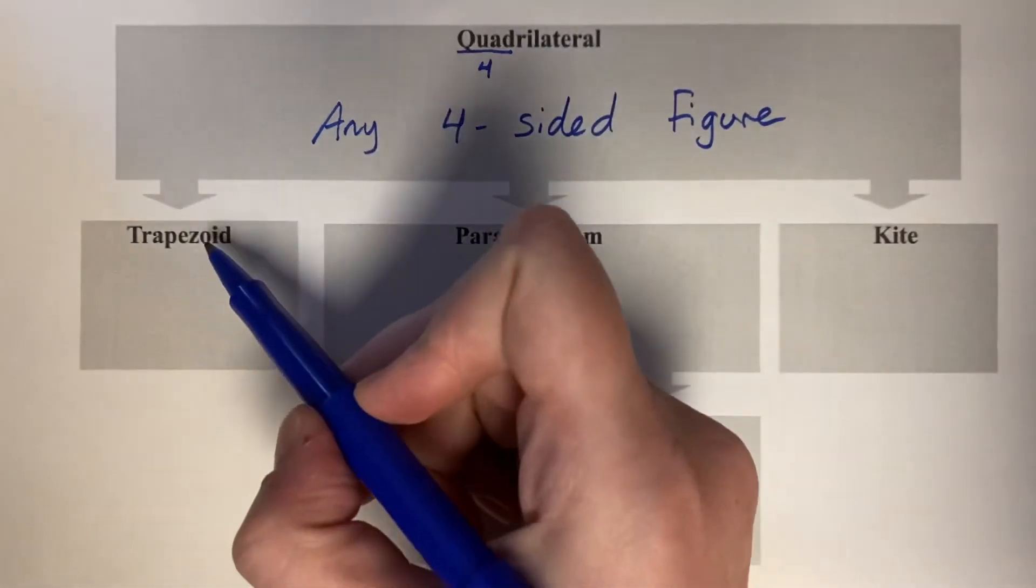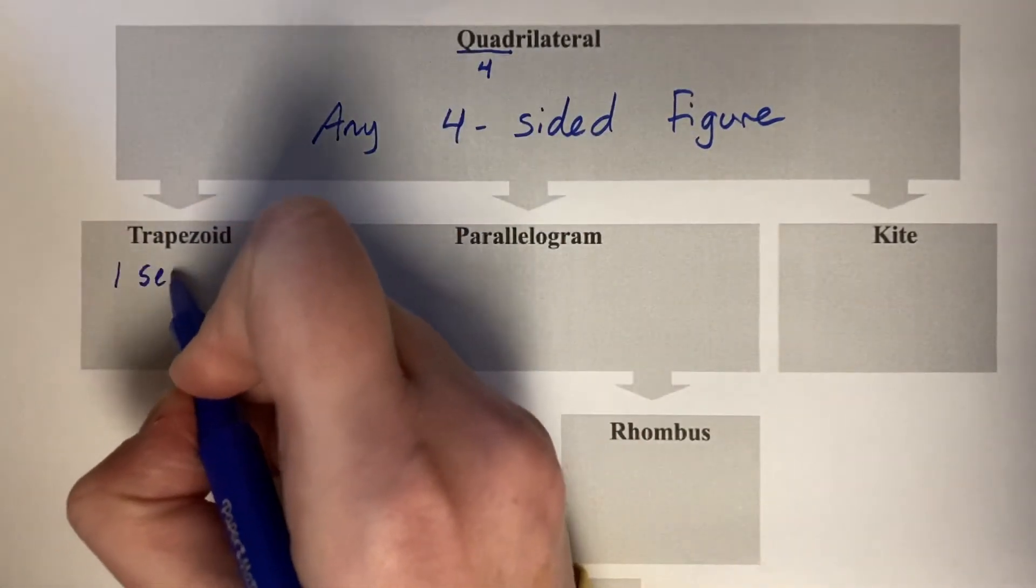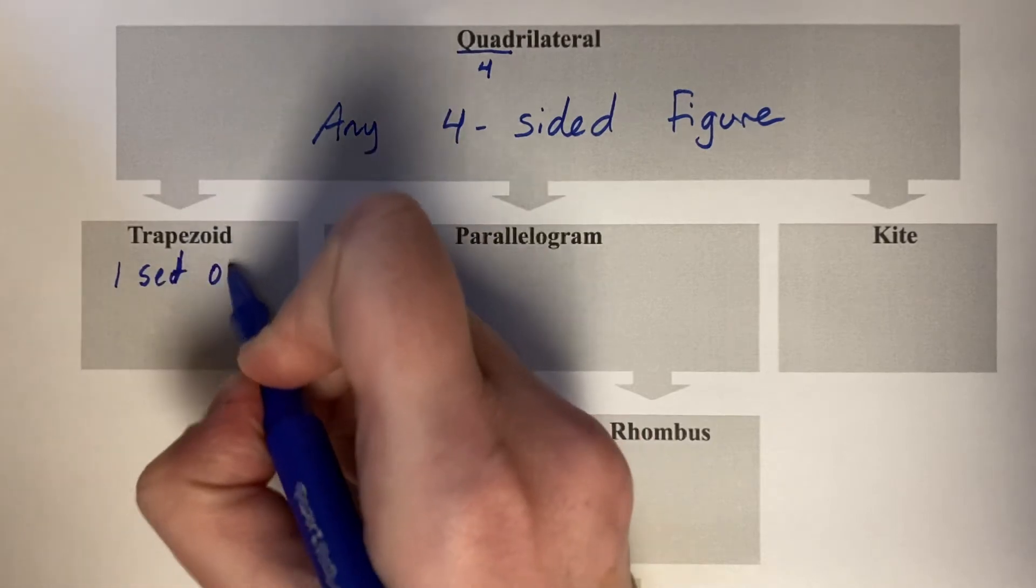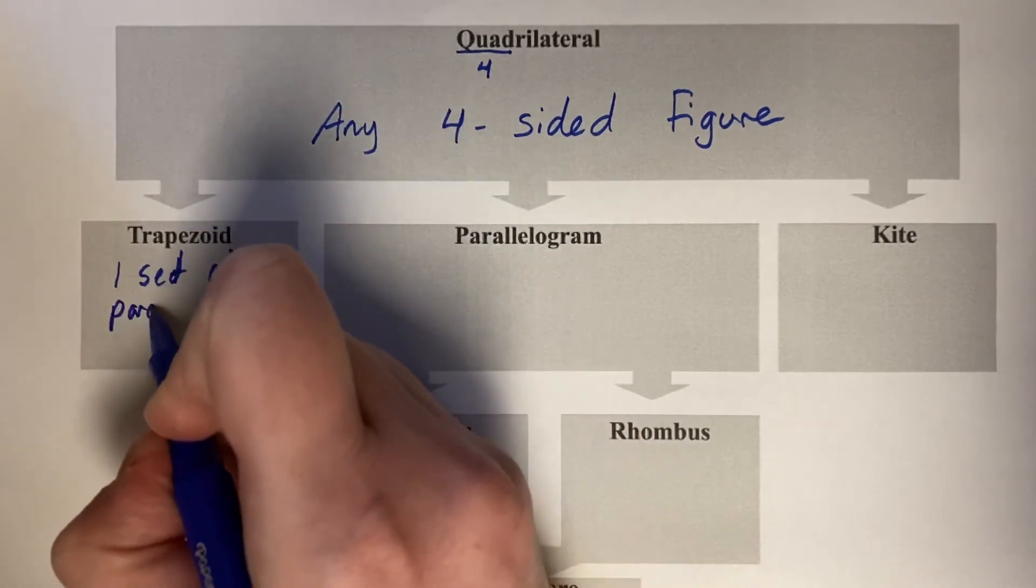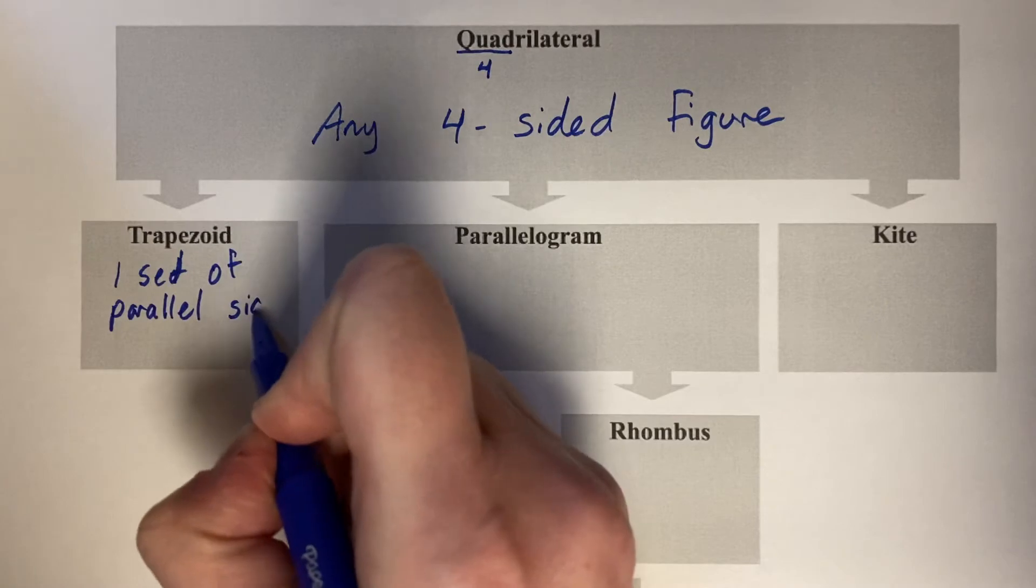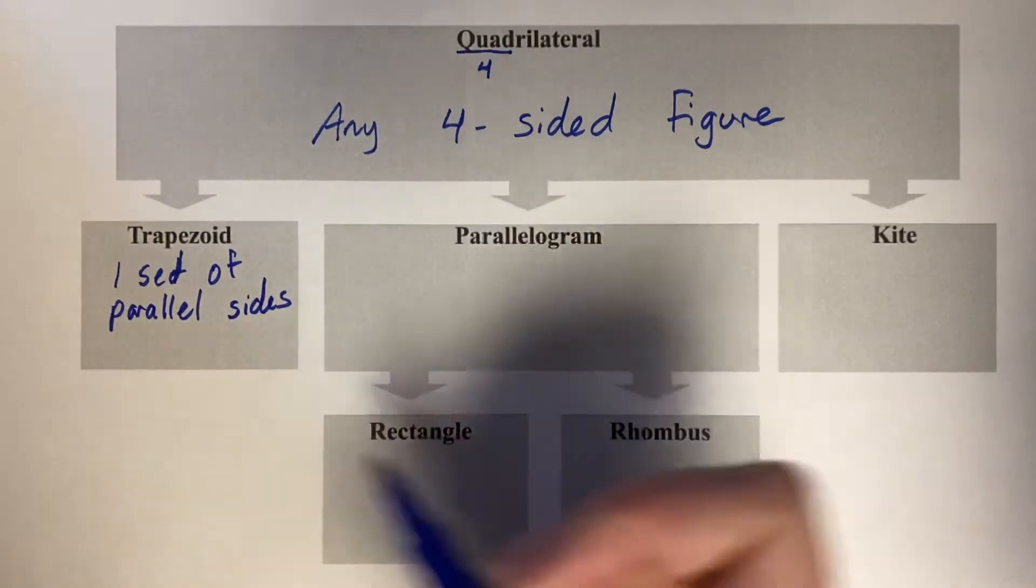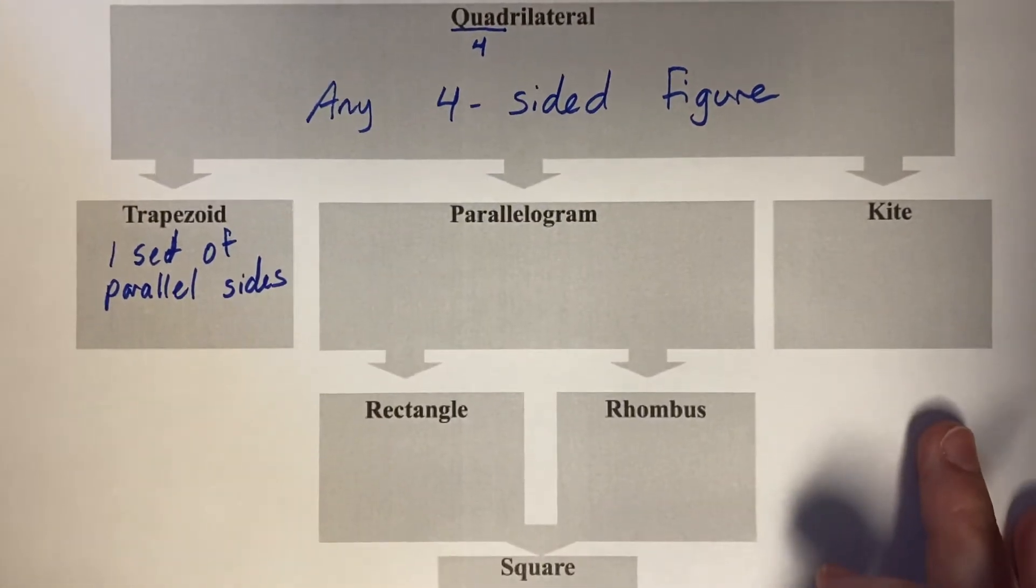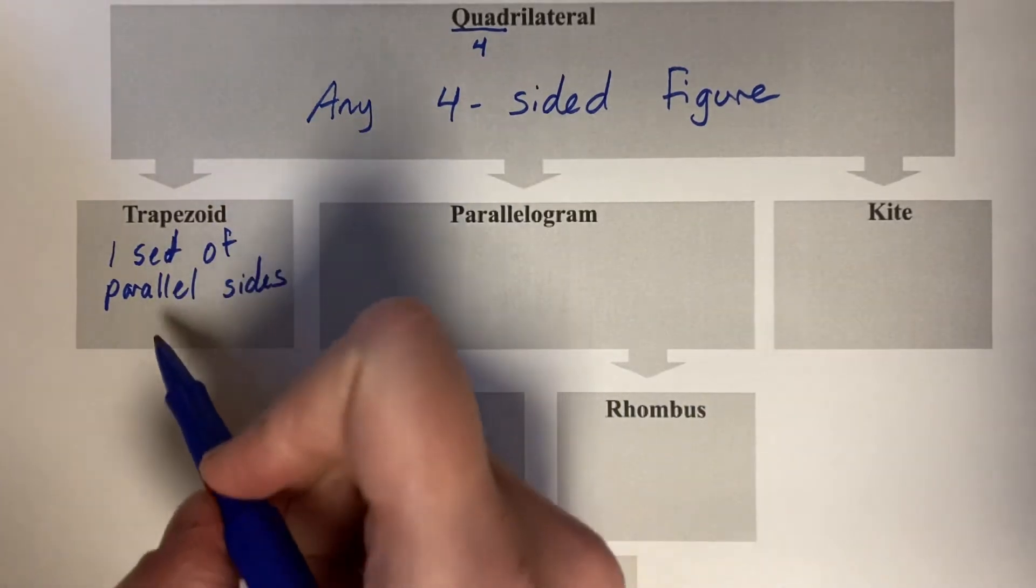We'll start over here with trapezoid. Trapezoid is one set of parallel sides, so it's only got one set of parallel sides. There's two different types of trapezoids that we'll talk about.